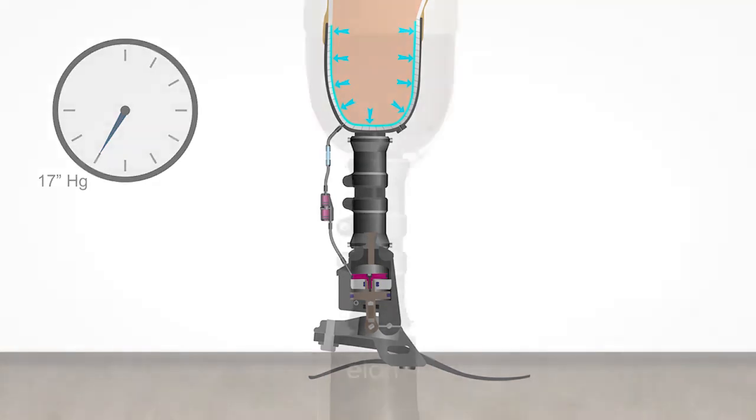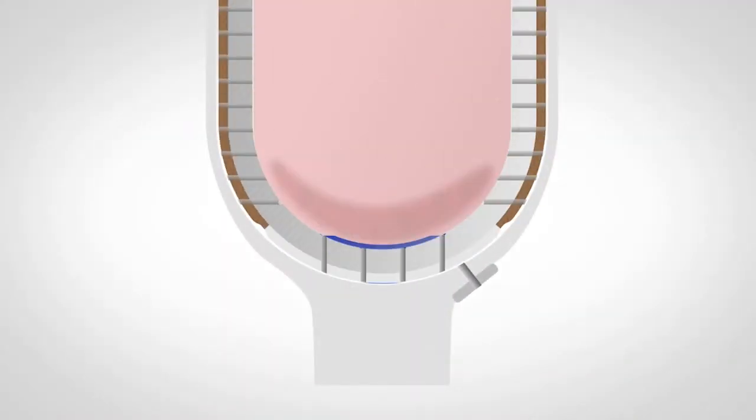When used in conjunction with the Silk Air Breathe Liner, the vacuum is applied directly to the residual limb to further enhance the connection between the limb and the socket.